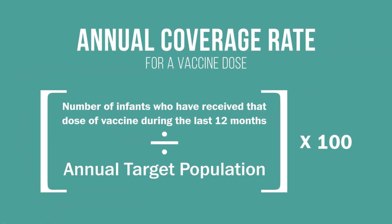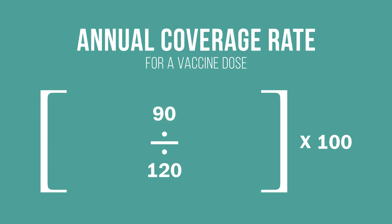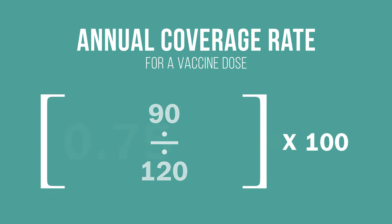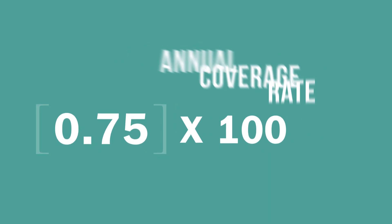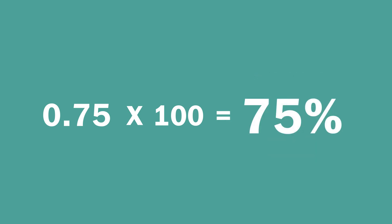Let us do a calculation together. Let us say the target population is infants under the age of one, and the number of infants is 120. When we look at data for the past 12 months, we see that we delivered 90 doses of pentavalent 1. 90 divided by 120 is 0.75. Multiply that by 100 and the result is our annual coverage rate for pentavalent 1, which is 75%.